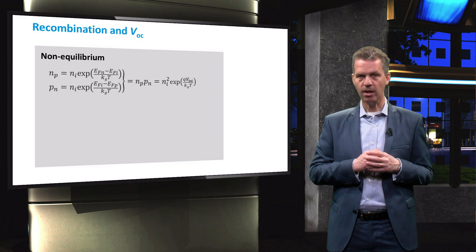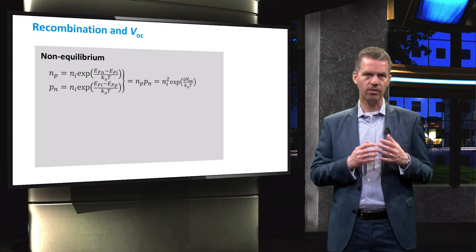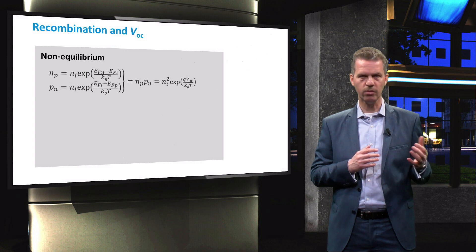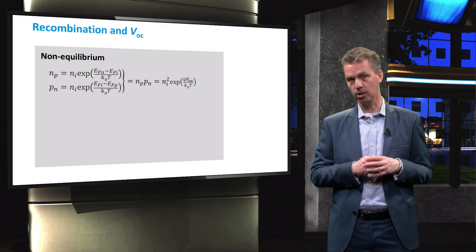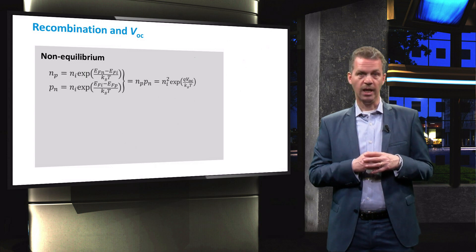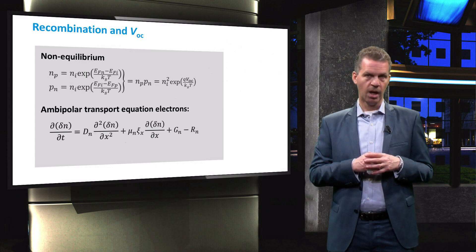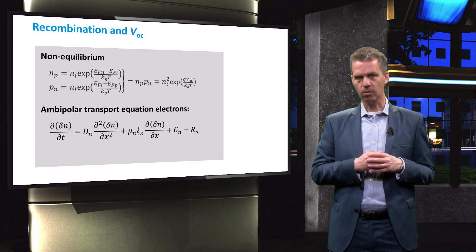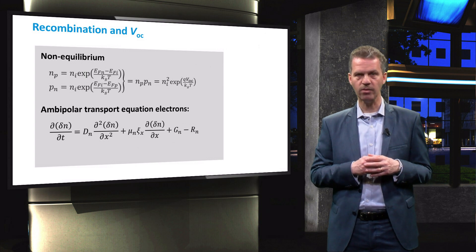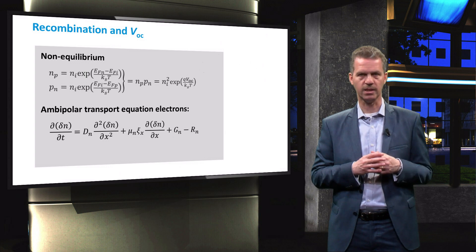Taking into account the band diagram from the previous slide, we can derive a relation between the minority carrier concentrations and the open circuit voltage. Furthermore, in the PV energy conversion course, we have discussed the ambipolar transport equation that describes the concentration of electrons and holes in a semiconductor material as a function of time and space.